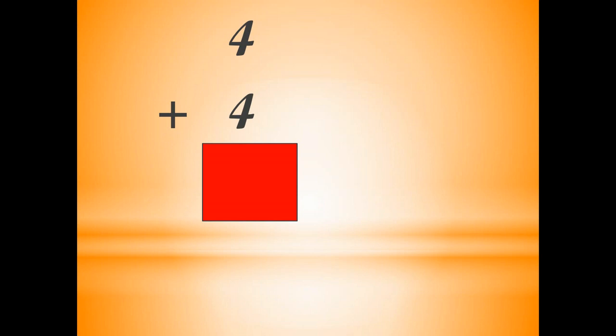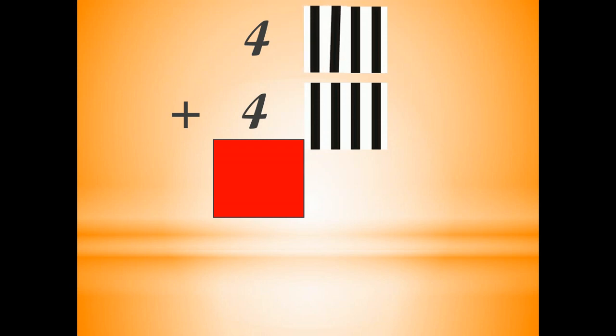Now what you see here — it's 4 plus 4. Tell me what will be the answer. First number is 4, so we will draw four lines: 1, 2, 3, 4. Again for 4 plus 4, we will draw four more lines: 1, 2, 3, 4. Now we will count all the lines: 1, 2, 3, 4, 5, 6, 7, 8. So your answer is 8. 4 plus 4 is equal to 8.